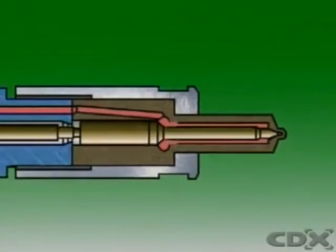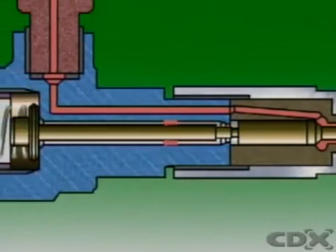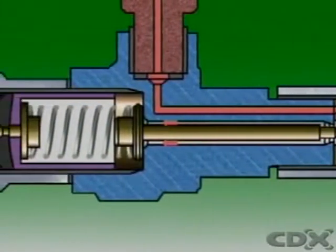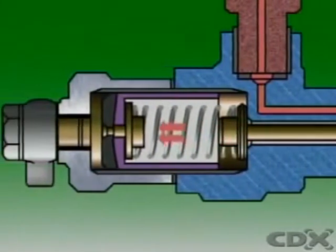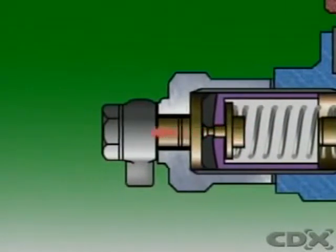Some of the fuel is allowed to leak between the nozzle needle and the body to cool and lubricate the injector. This fuel is collected by the leak-off line and returned to the fuel tank for later use.